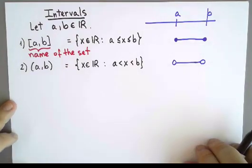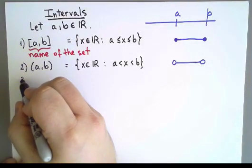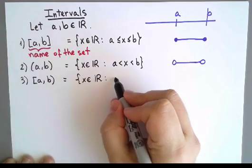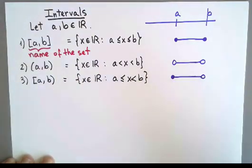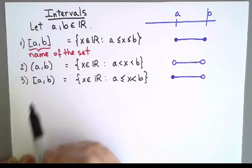I could also include one of the endpoints, but not the other. For example, [a,b). Or we could change that and include a but not b.